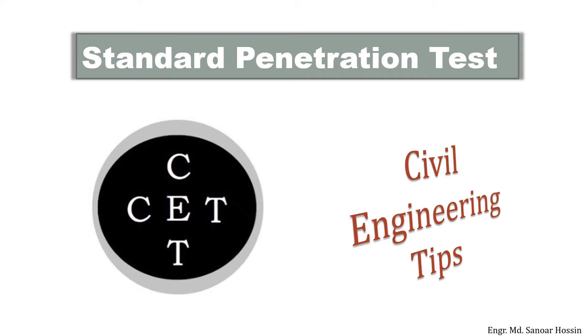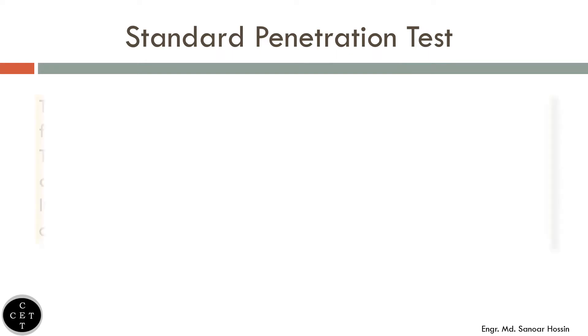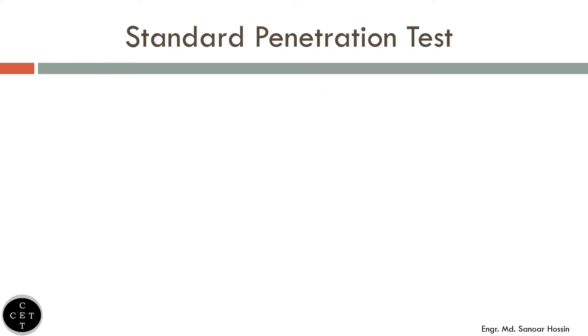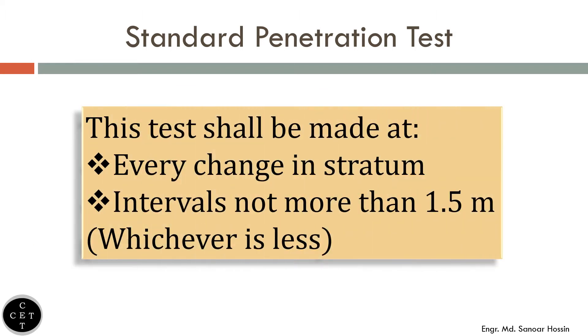This is the Standard Penetration Test. This test is the most commonly used in-situ test, especially for cohesionless soils which cannot be easily sampled. The test is extremely useful for determining the relative density and angle of shearing resistance of cohesionless soils. It can also determine the unconfined compressive strength of cohesive soils.